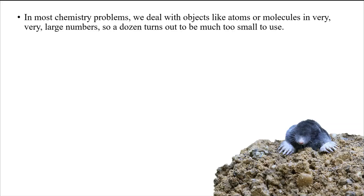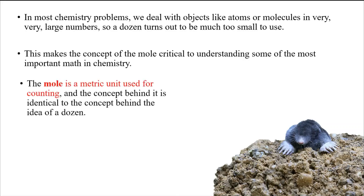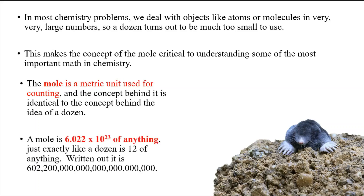In most chemistry problems we talk about tiny little objects in huge numbers, so a dozen just turns out to be too small to use. This makes the mole really critical to understanding chemistry. The mole is a metric unit used for counting, and the concept behind it is identical to the concept of a dozen — except instead of 12, a mole is 6.022 times 10 to the 23rd of anything.